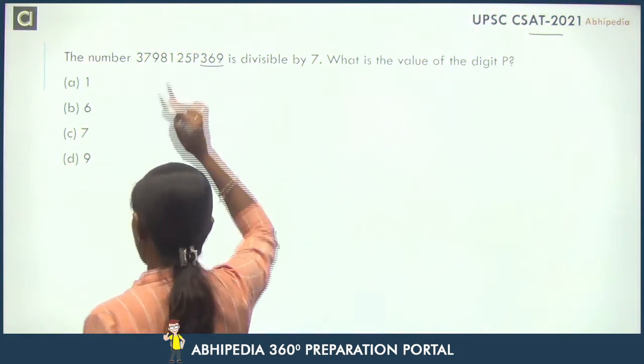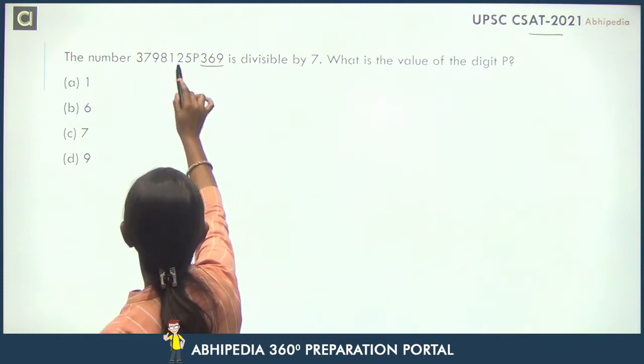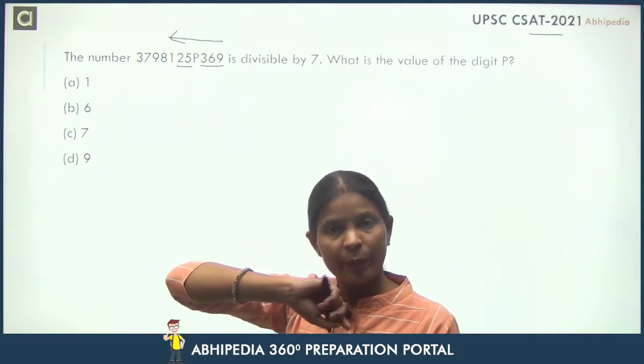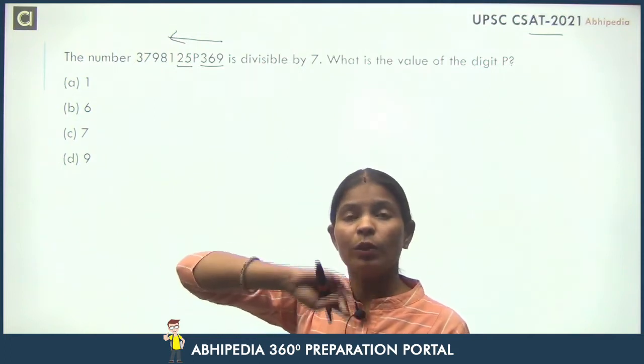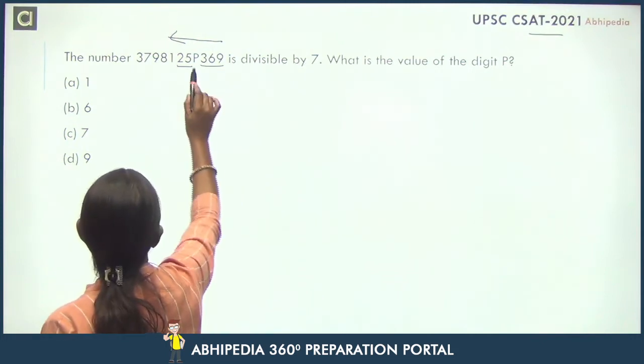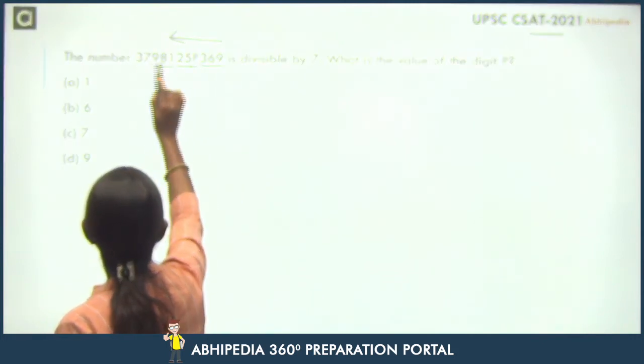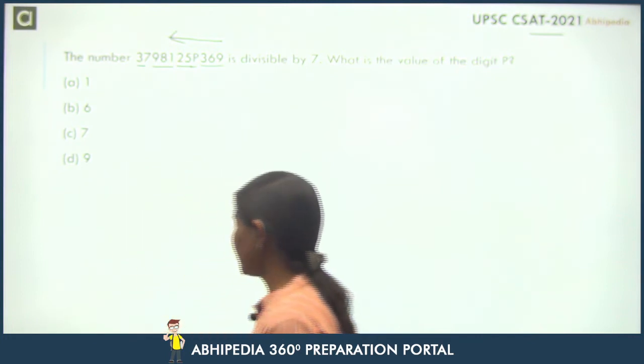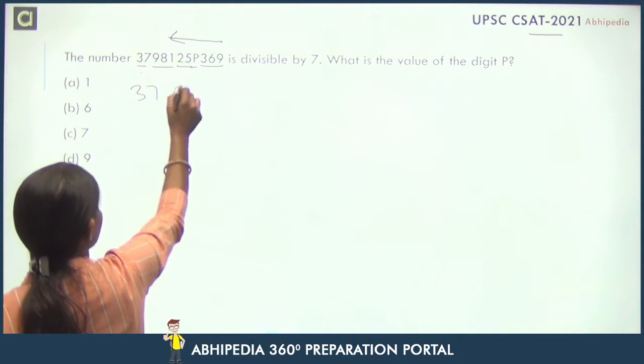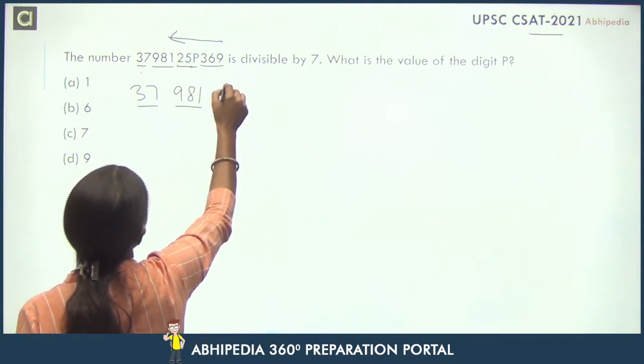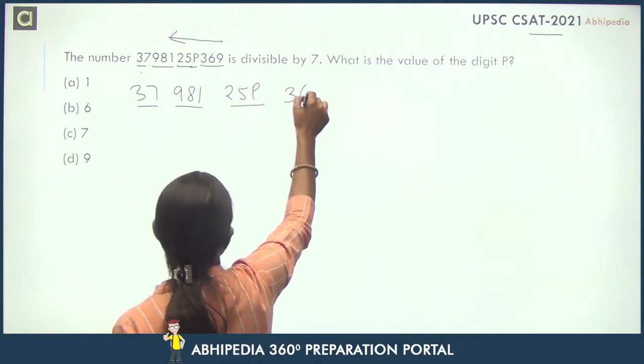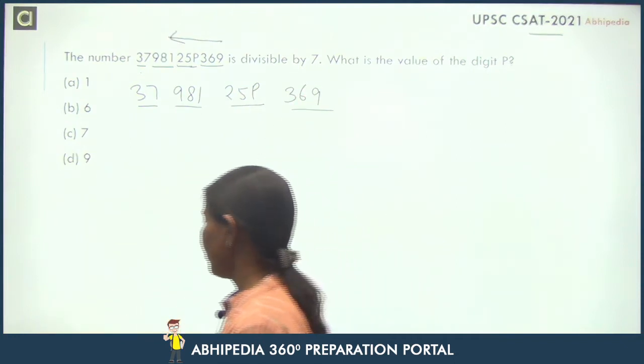We will make pairs: 37, 981, 25P, and 369.